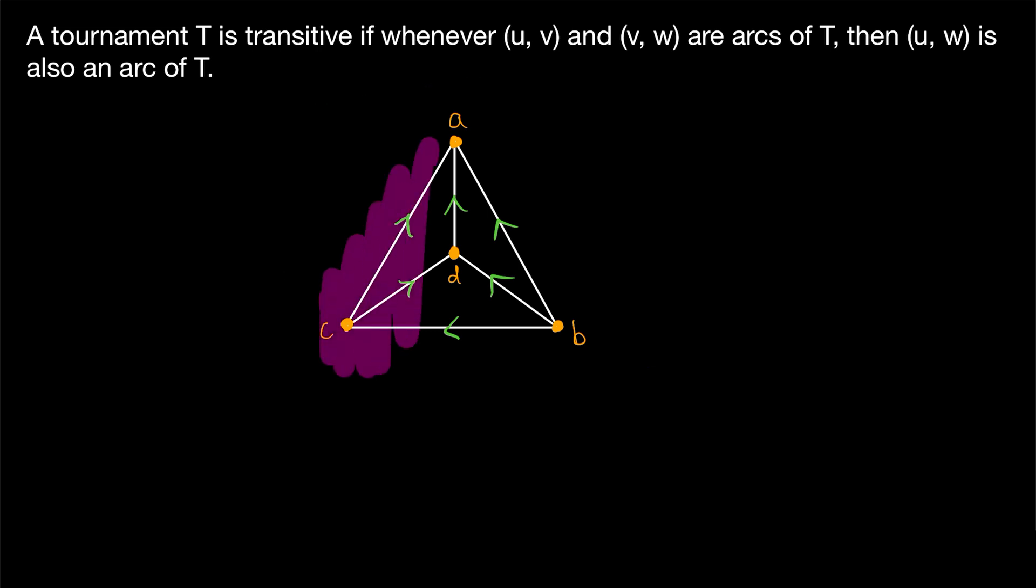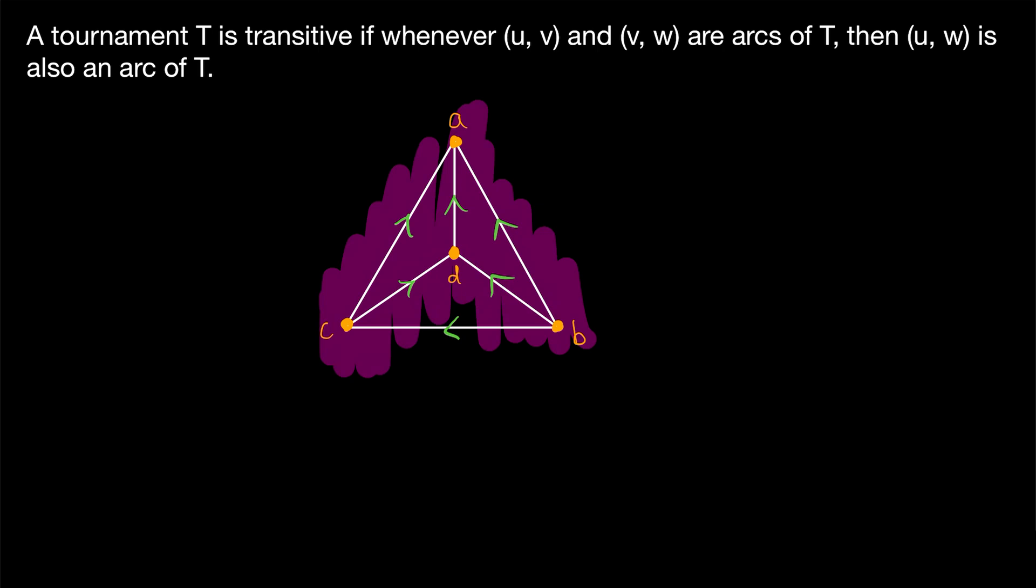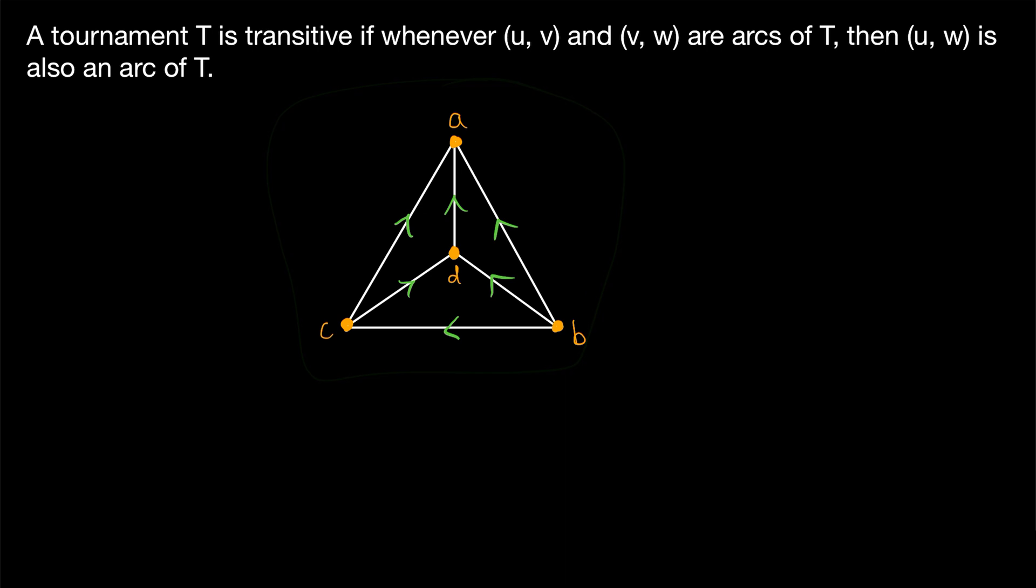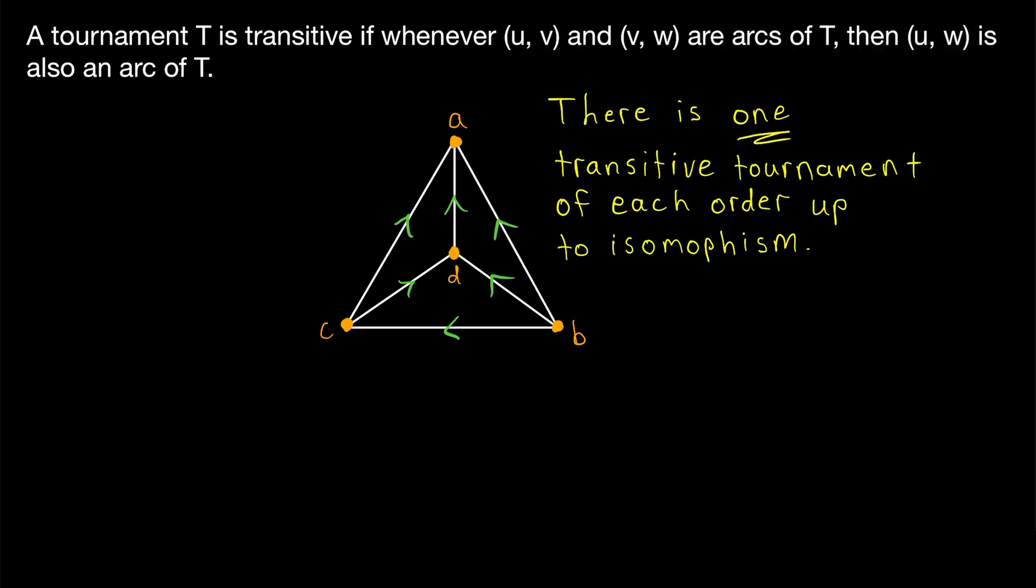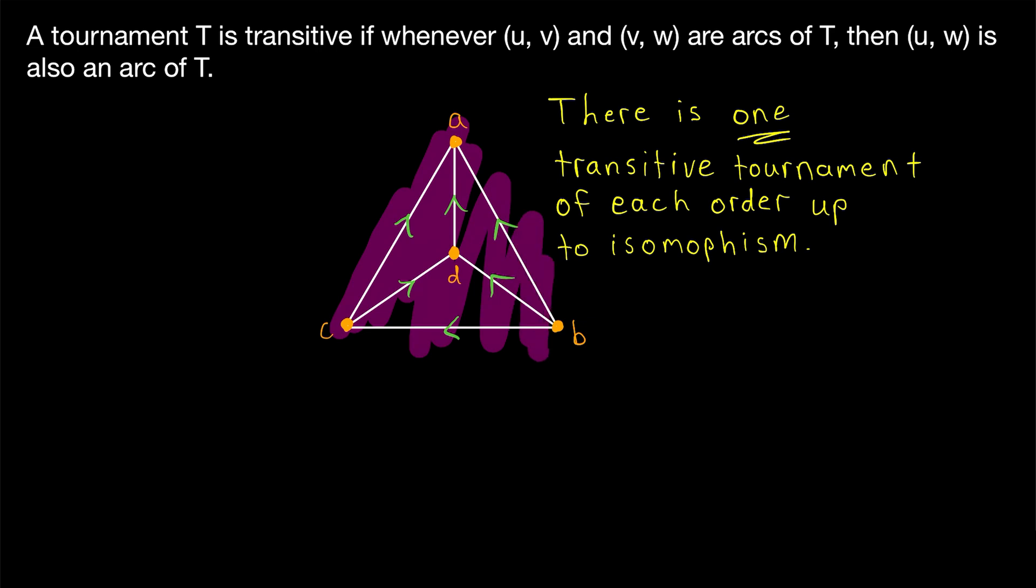You might ask, could we have done this a different way? Could we have come up with a different transitive tournament on these vertices that's not isomorphic to this one? Interestingly, the answer is no. In the last lesson, we talked about how it's difficult to count the number of non-isomorphic tournaments on any number of vertices, but for transitive tournaments, there's exactly one transitive tournament of each order up to isomorphism. For a four-vertex transitive tournament, this is the only one.